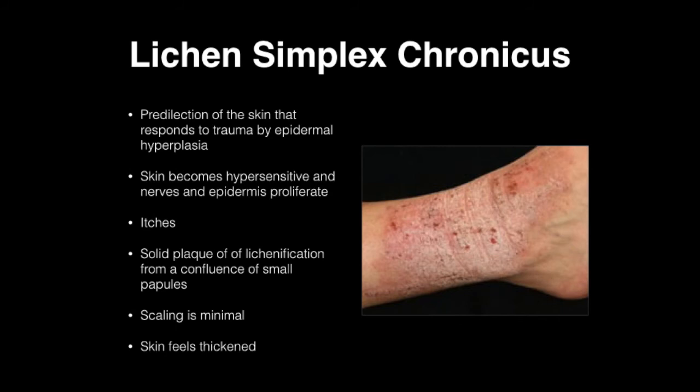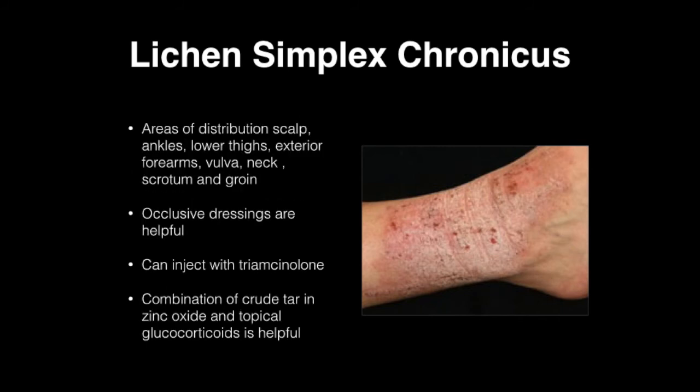Areas of distribution include the scalp, ankles, lower thighs, exterior forearms, vulva, neck, scrotum, and groin. Occlusive dressings are helpful for this. You can actually do an intralesional injection of triamcinolone. You can also use a combination of crude tar and zinc oxide, and topical glucocorticoids are helpful in this condition.